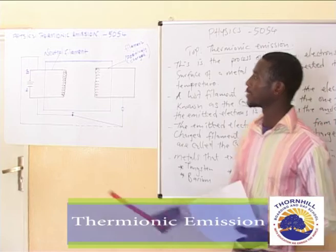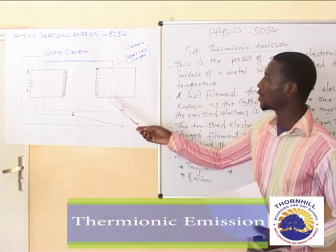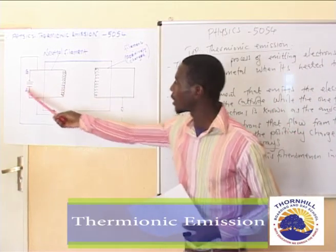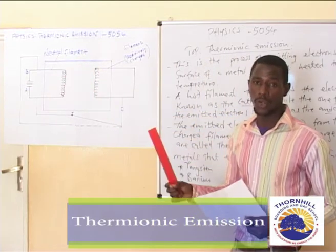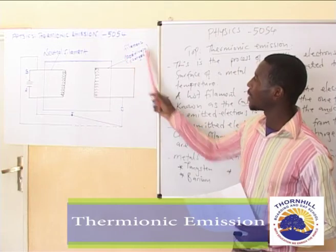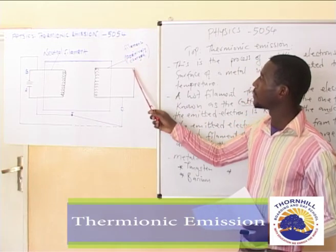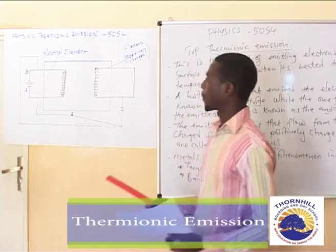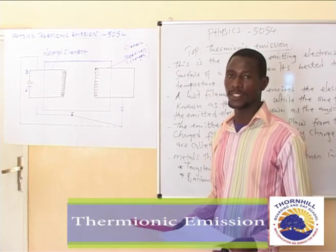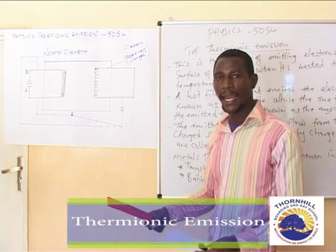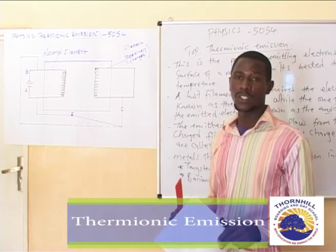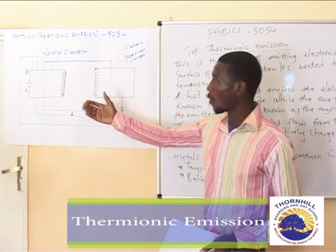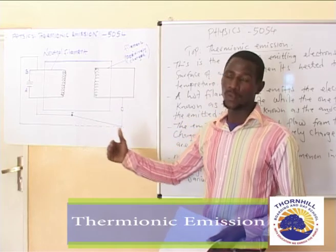In this diagram we have two different filaments. The first filament connected to the circuit is the one we consider as our neutral filament. The other filament on the other side is labeled as the positively charged filament. If the surface of a metal is heated to a higher temperature, the delocalized electrons found in that metal will gain a lot of kinetic energy — enough to make them escape the surface of the filament or metal.